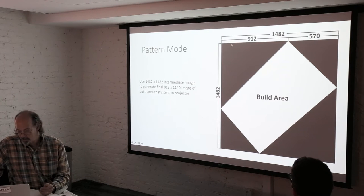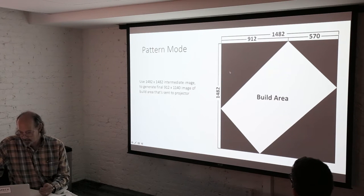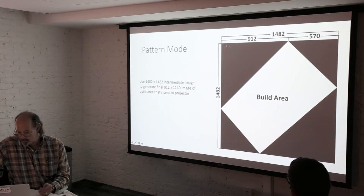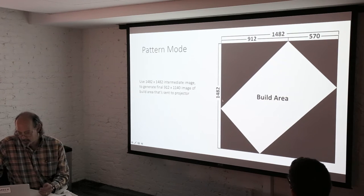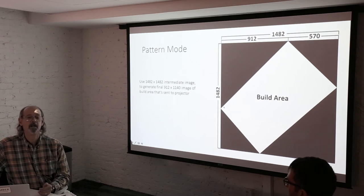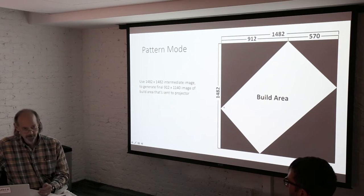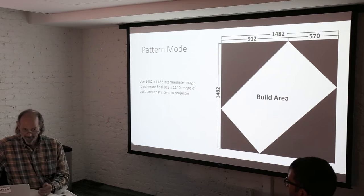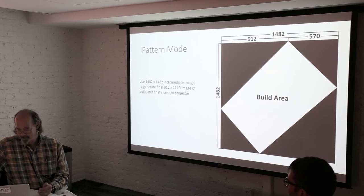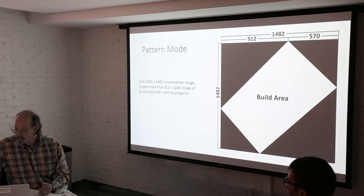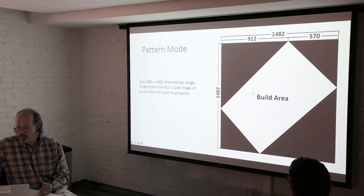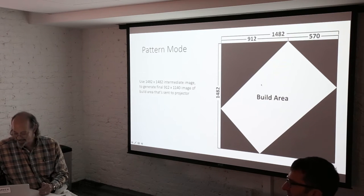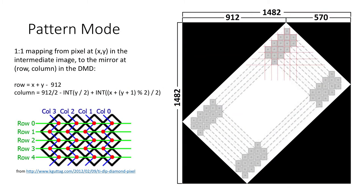If you notice, so this is an isosceles right triangle here, this black area. We've got 912 pixels here. There's 912 pixels here. How many pixels do you suppose there are along the diagonal, the hypotenuse? Anybody know their Pythagorean theorem? Square root of 2 times 912, which would be 1290. No, actually there's 912 pixels. But they're oriented corner to corner. That's right.